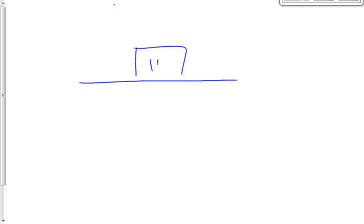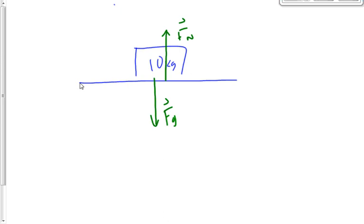We're going to draw a free-body diagram. For instance, if we have a 10-kilogram object right here, there's a force of gravity acting on that 10-kilogram object, acting down. There's a normal force acting on that object that will most likely be the same value as the force of gravity.